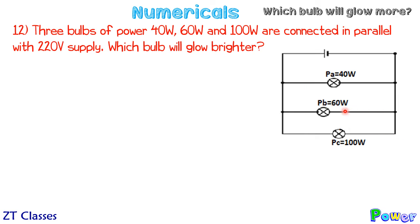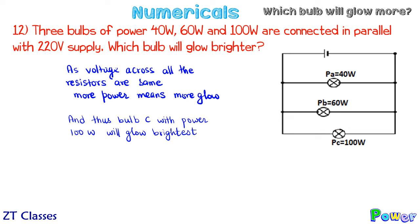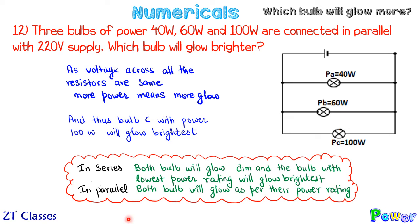In parallel, the voltage or potential drop does not change, so each bulb works at its rated power output, and the bulb with higher power will glow more. In series, both bulbs glow dim, but the bulb with lower power rating will glow brighter. In parallel, if the voltage supply is the same as their rated voltage, each bulb glows according to its own power rating.